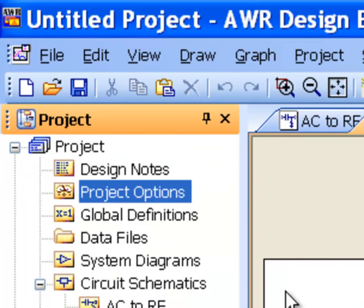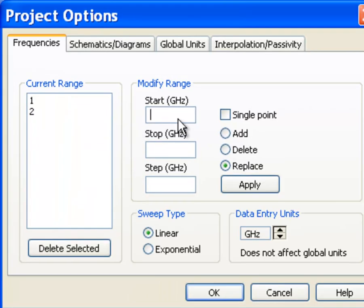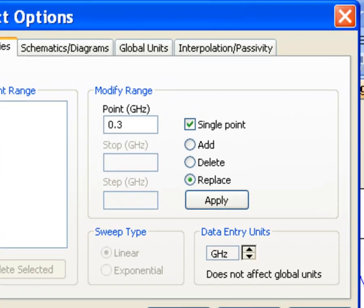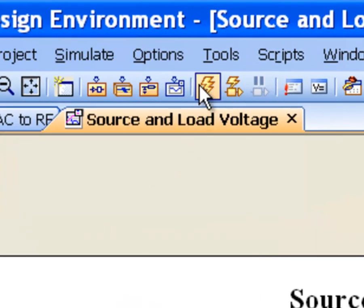Now we need to pick the measurement frequency. We need to go to project options and we'll pick just one frequency, 0.3 GHz or 300 MHz to start with. Click on single point, apply and OK. And simulate.